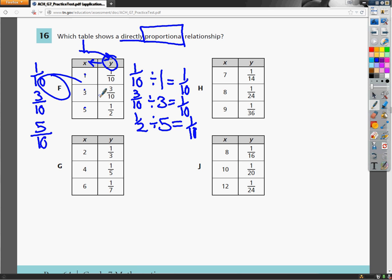But let's test my theory in one of the other ones to see if it works. Now if I use the same thing in H, it's a proportion, so I'm going to set up a fraction. 1 fourteenth divided by 7. It gives me 1 ninety-eighth.